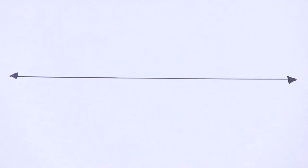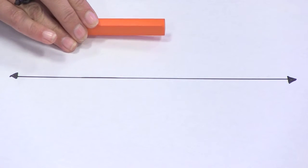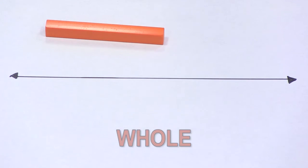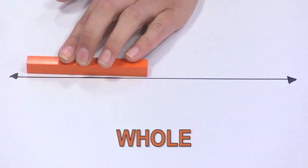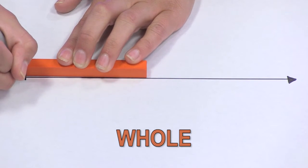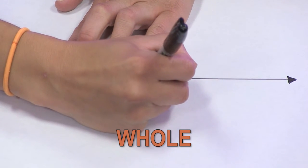We are going to use Cuisinaire rods to help us create number lines with equal partitions. The orange rod will represent one whole. I will use this to segment one whole on my number line.